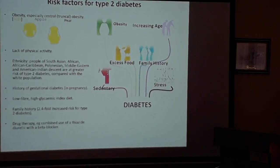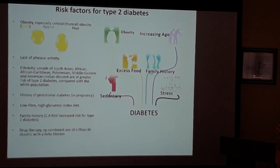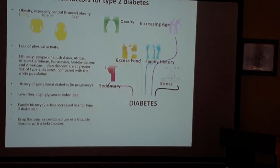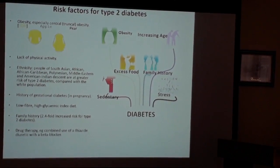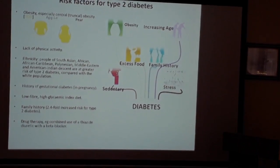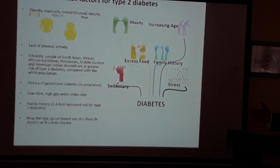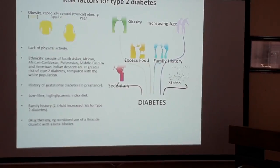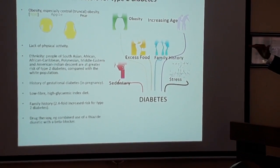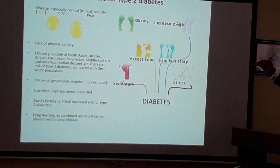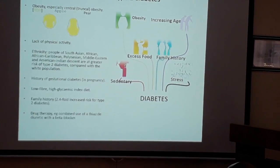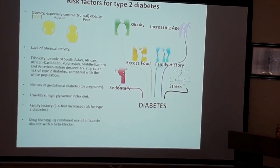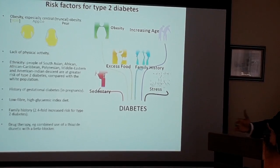A high-sugar or low-fiber diet increases risk, as does a family history of diabetes. If a parent became diabetic at 50, you are likely to as well at a similar age. However, you can modify the onset by managing your weight, exercise levels, and diet — you may still develop Type 2 diabetes, but you can delay it.